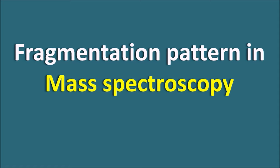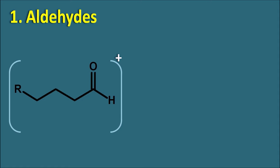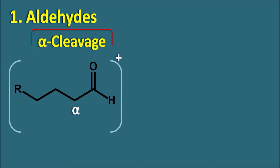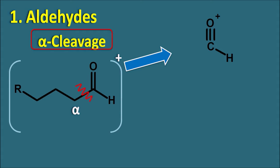First one is the aldehydes. Let us take the structure of aldehydes forming the molecular ion. The aldehyde is the CHO group and this carbon is the alpha carbon. Aldehydes will undergo alpha cleavage in order to produce a fragmentation — that is, cleavage between the aldehyde carbon and the alpha carbon. When these are cleaved they produce two fragments, and one fragment has the positive charge. We can easily calculate the m/z value of this fragment ion.